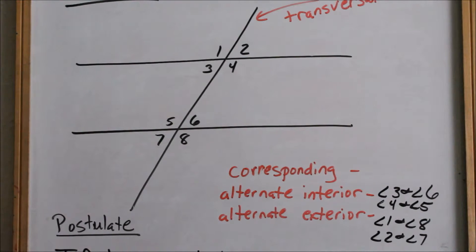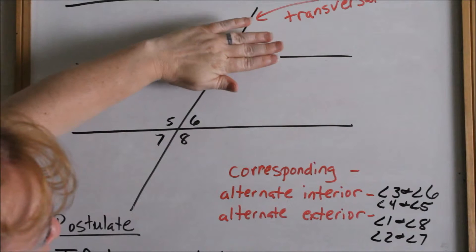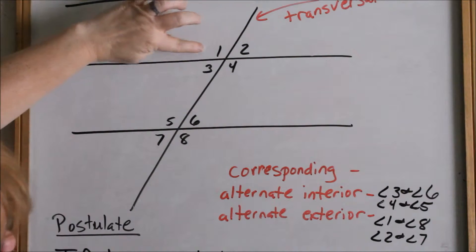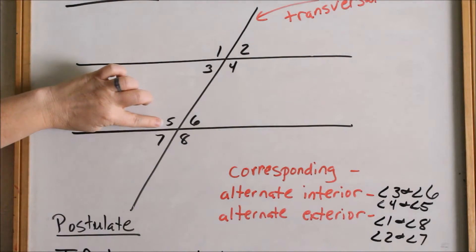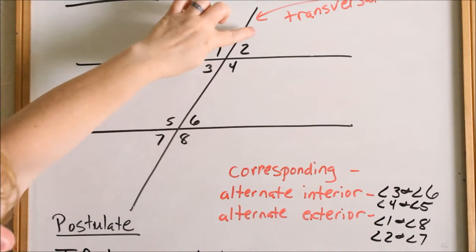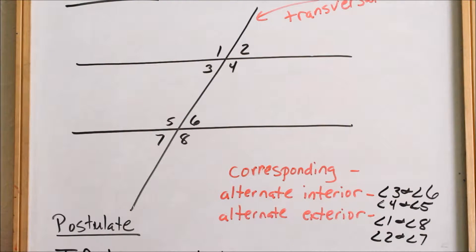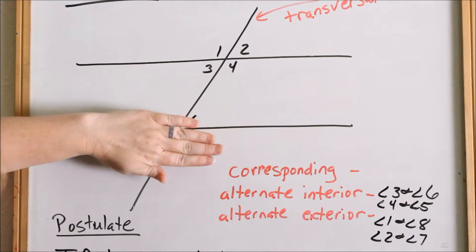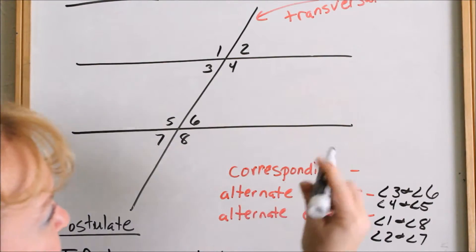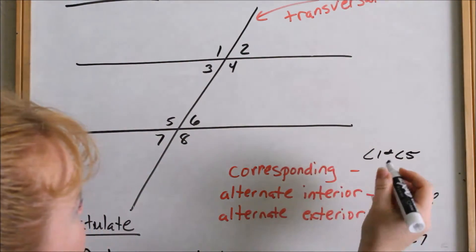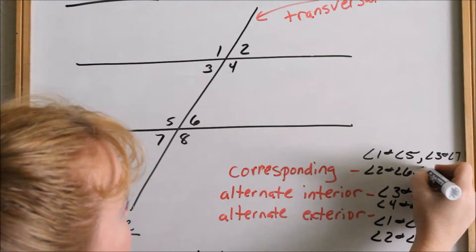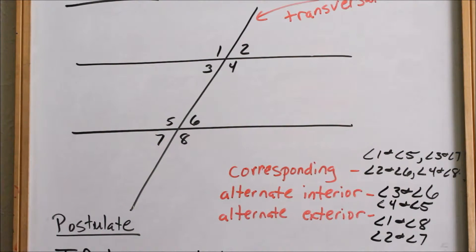Now let's look at corresponding angles. Corresponding means they fit together. If I took this picture and scooted it down to this line, which angles would lie on top of each other? Angle one would lie on top of angle five, angle three on top of angle seven, angle four on top of angle eight, and angle two on top of angle six. These are all corresponding angles. So angles one and five, three and seven, two and six, and four and eight are all corresponding, and corresponding angles are congruent.